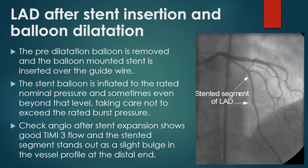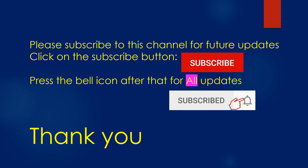Use of intravascular ultrasound is beneficial in recognizing good stent apposition. Its use is desirable in critical positions like the left main coronary artery, as incomplete apposition leads to suboptimal lumen improvement and enhances the potential for catastrophic stent thrombosis.